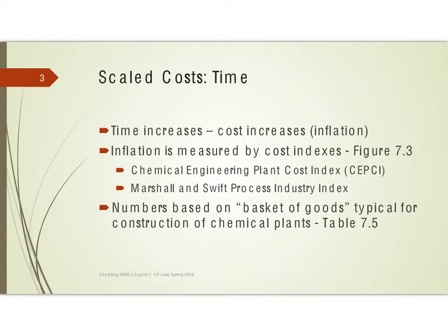The two that are most frequently used are the Chemical Engineering Plant Cost Index, which is the CEPCI, or the Marshall and Swift Process Industry Index. Each of these is going to be based on what's called a basket of goods that would be typical for construction in chemical plants, which is why we use these. If you're using this or wanting to apply this to a different industry, then you need to find the cost index that's appropriate for that material.